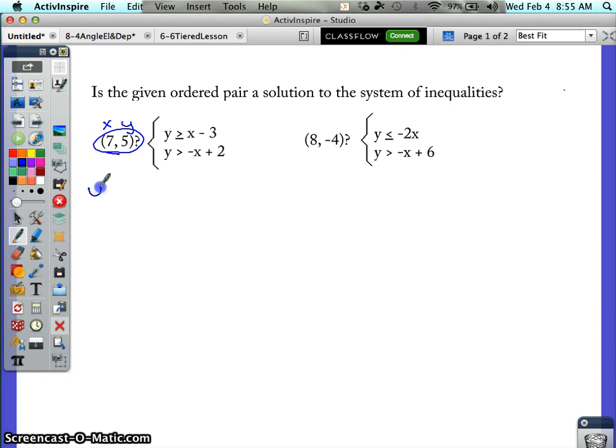So I'm going to take my two inequalities: y is greater than or equal to x minus 3, and y is greater than negative x plus 2. Let's substitute in 7 for x and 5 for y and see if this ordered pair is a solution.